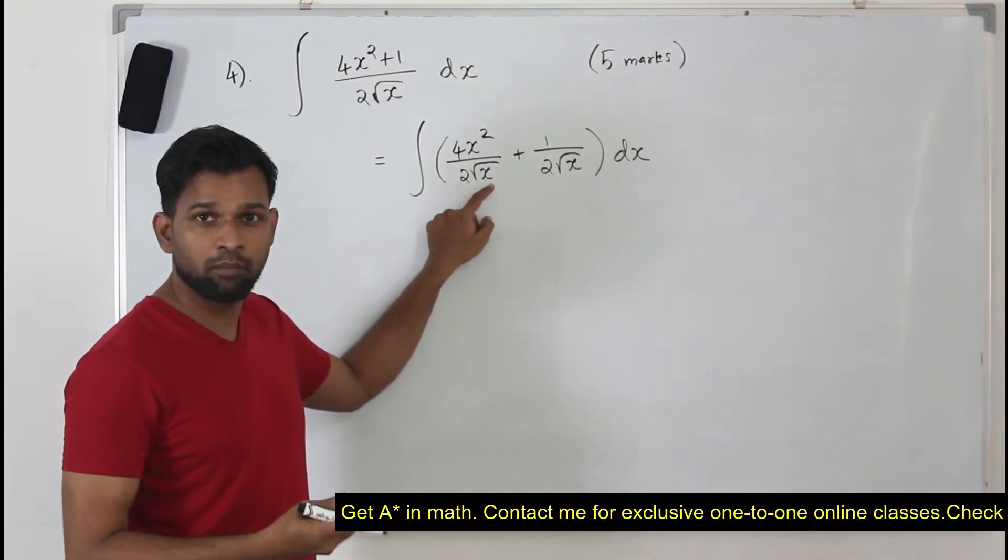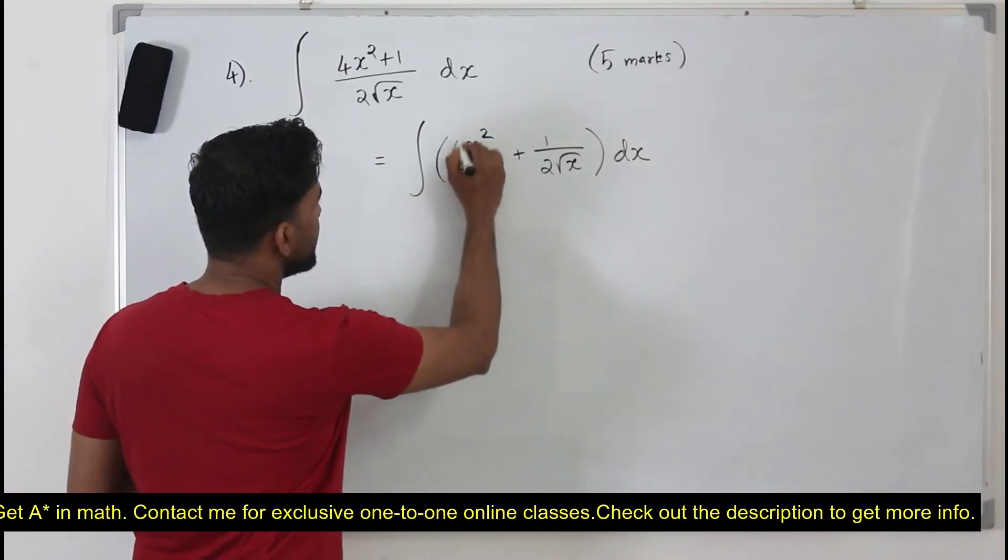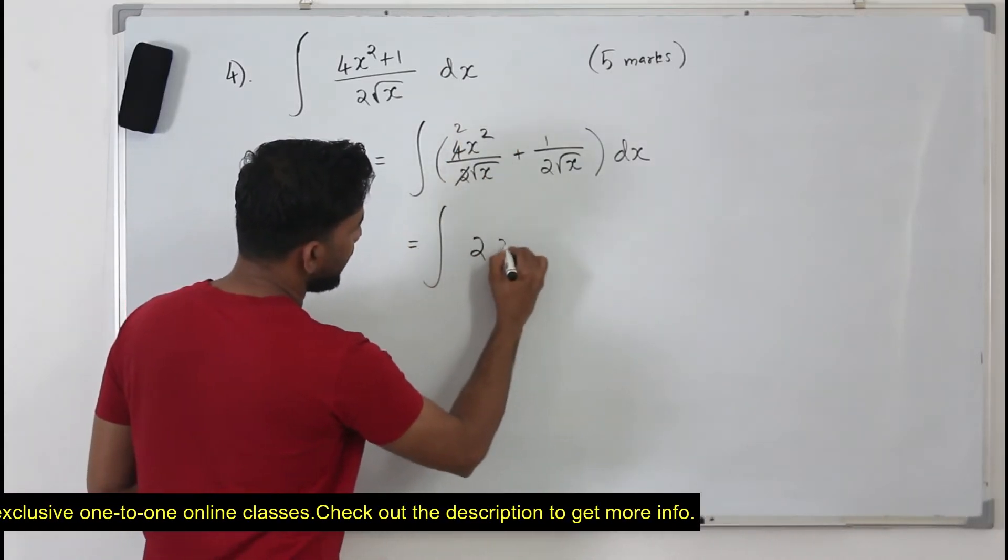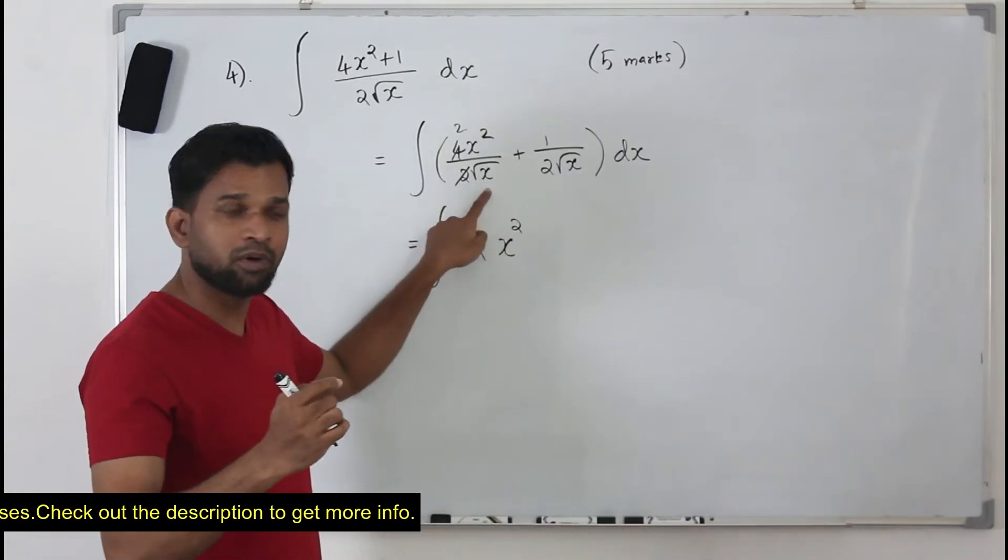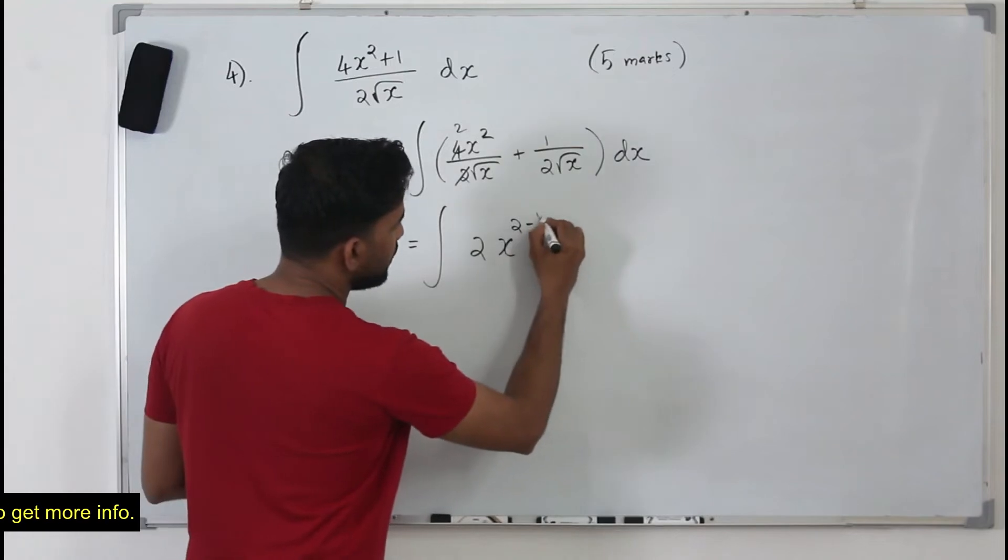This is x to the power 1 by 2. You bring it to the numerator. So 4 and 2 can be cancelled, 2 2's of 4. So it becomes 2x square and if you bring this x to the power half to the numerator, it will become x to the power minus half.